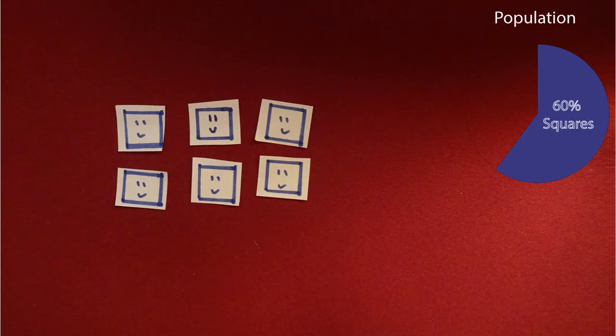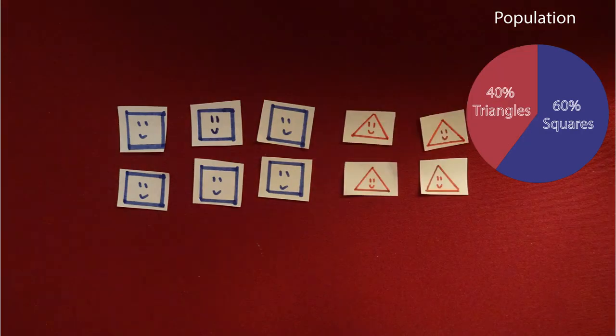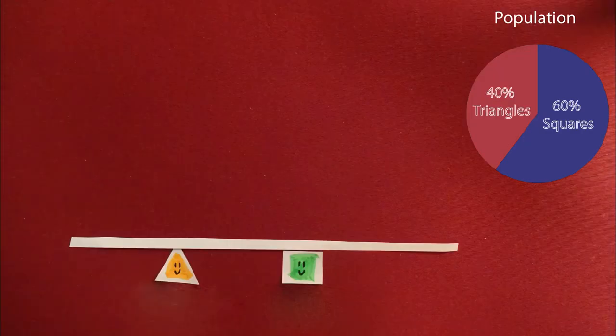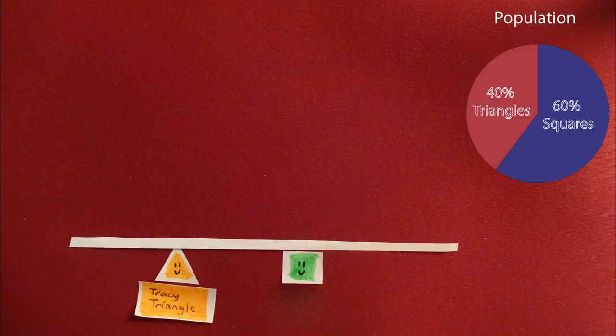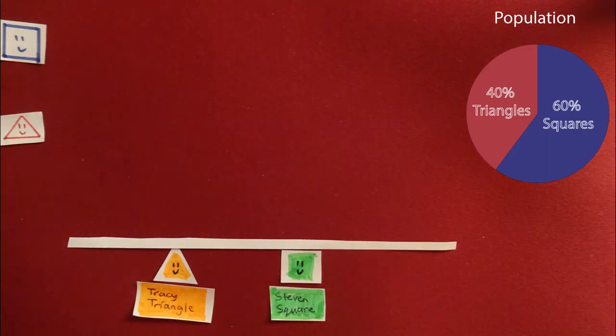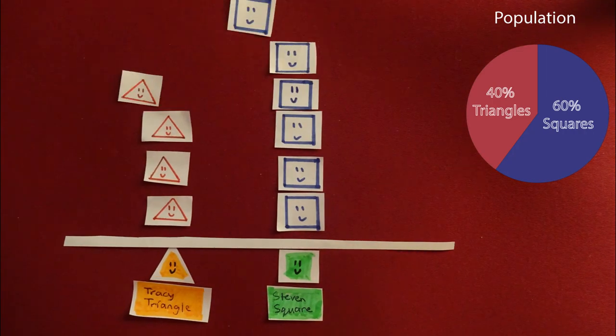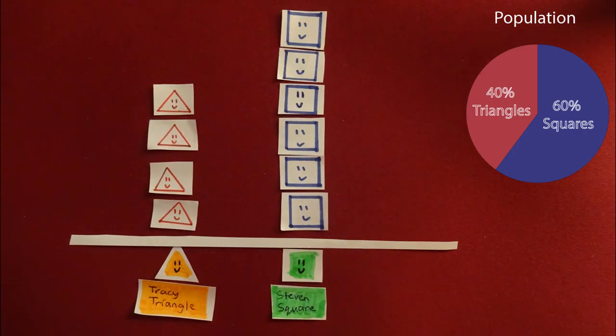Let's follow a sample presidential election in a town of 60% squares and 40% triangles. Two candidates are running: Tracy Triangle and Stephen Square. Each citizen votes for the shape that resembles them the closest. Stephen Square has the most votes, so he is declared the winner. Seems pretty fair.